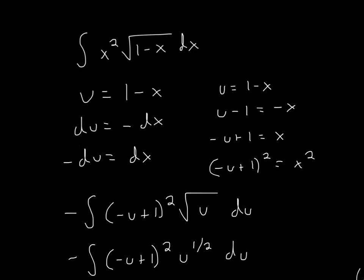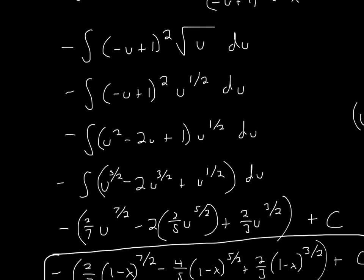Remember, we got negative du, so we always have to keep a negative sign outside of the entire integral. So now we have negative (negative u plus 1) squared — because that equals x squared — times the square root of u, since u equals 1 minus x. We can change square root of u to u to the 1 half power, which helps us when we need to integrate.